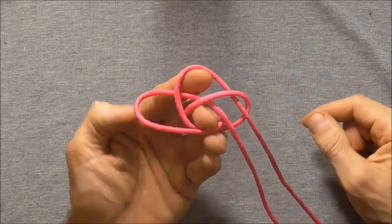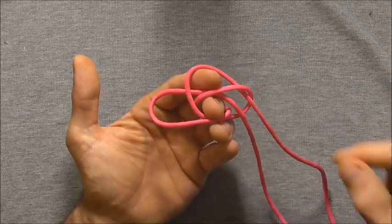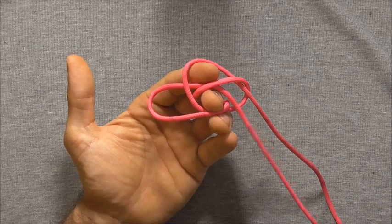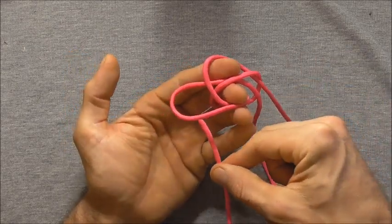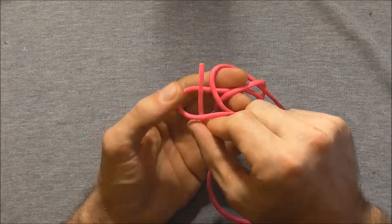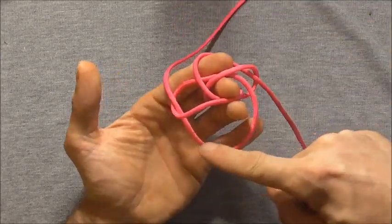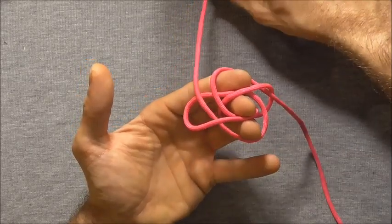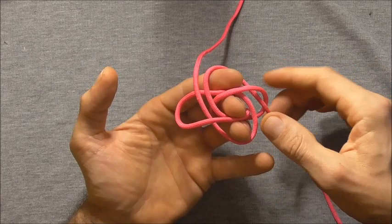And I want to just insert my index finger into that top lobe because I don't want to lose it. And I'm going to take this bottom strand up through that left lobe. And it will also create its own lobe down here at the bottom. And I want to insert my ring finger so I don't lose that lobe.